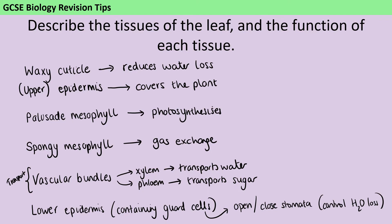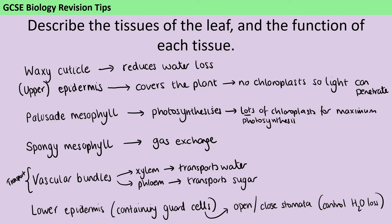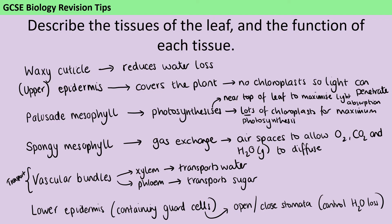Those guard cells are there to open and close the stomata and therefore control the amount of water lost by transpiration. Now we can think about how each tissue is adapted to perform those functions. The upper epidermis contains next to no chloroplasts, making them basically transparent cells, which means light can penetrate to the palisade layer where photosynthesis is actually happening. Because photosynthesis is happening in the palisade layer, it needs lots and lots of chloroplasts, and the palisade layer is found right near the top of the leaf to maximise the amount of light those cells receive. The spongy mesophyll, as the name suggests, is full of holes, allowing oxygen, carbon dioxide, and water vapour to diffuse through the plant.